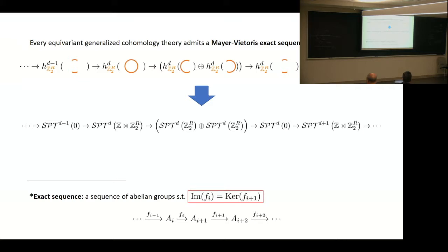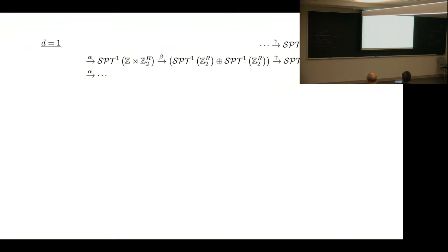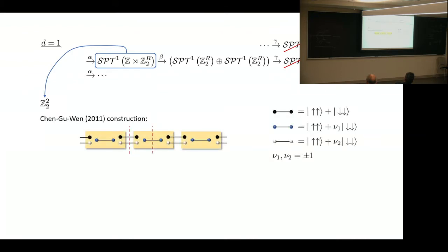Now we can examine this more closely. In one dimension, we take out part of the sequence for one dimension. It looks something like this. There are several terms that we already know. For instance, zero-dimensional SPT with Z_2 has a Z_2 classification, same for one dimension. For one dimension with translation and reflection, we have a Z_2 squared classification. Here is a very neat construction by Chen-Gu and Wen, which looks like this, where each box is a site and these pairs are entangled pairs like that, and they have different quantum numbers under reflection.